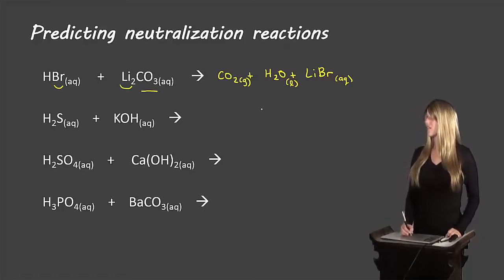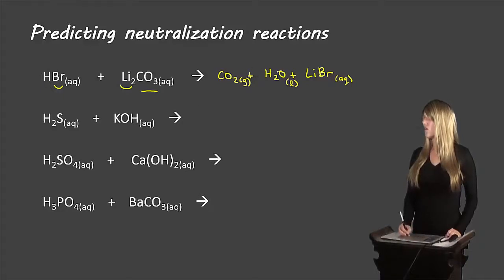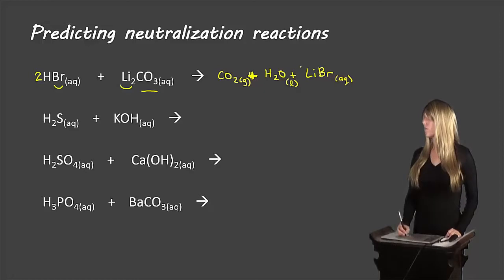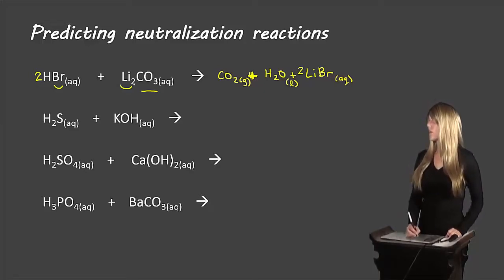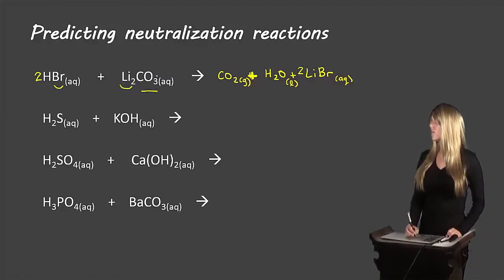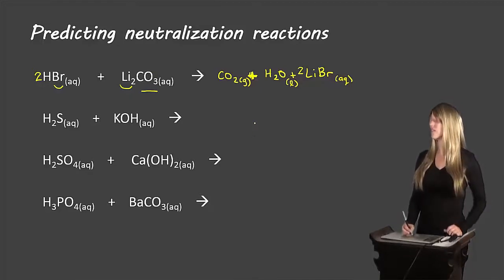To balance this equation: we have two hydrogens, so we need a coefficient of two on HBr, giving us two bromines — so we put a two on lithium bromide — giving us two lithiums. We have one carbon, one carbon; three oxygens: two plus one equals three. The equation is now balanced.